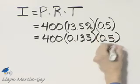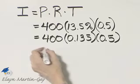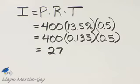And then times decimal 0.5. If you multiply, you'll have an answer here of 27. Now, what does 27 mean in the context of this problem? 27 is the amount of interest the couple needs to pay.